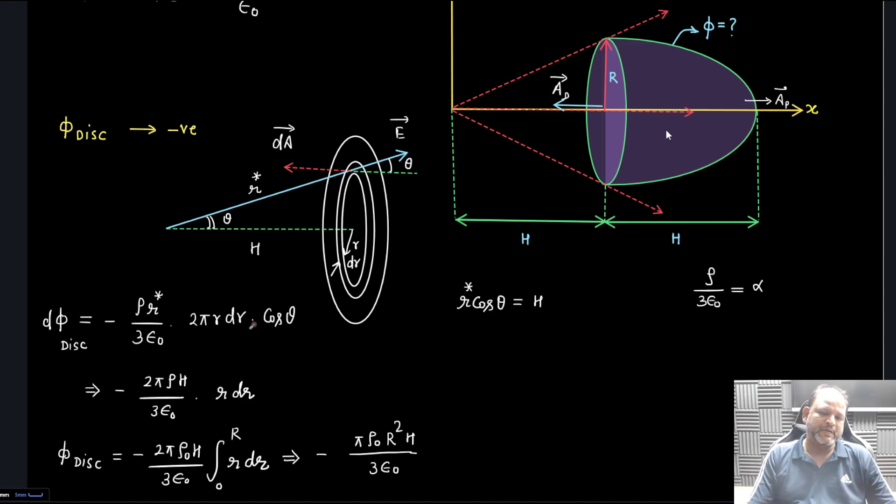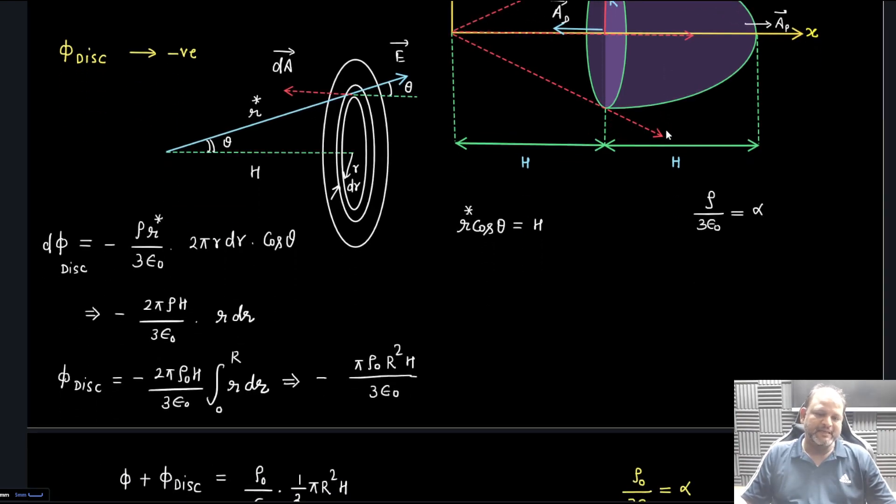So E minus sign due to obtuse angle, then da is 2πr dr then cos θ. Now r r* cos θ so this r* cos θ becomes h and this r dr is as it is. Even though I took this as r, I hope you realize this becomes constant and ρ/(3ε₀) is α. Then φ_disk we can calculate - zero to R if you integrate, you get -πρ₀r²h/(3ε₀).